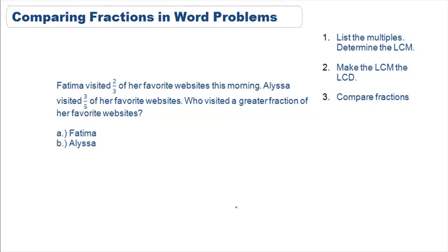Let's jump into the question so we can use the steps to help us solve. The problem reads: Fatima visited two-thirds of her favorite websites this morning. Alyssa visited three-fifths of her favorite websites. Who visited a greater fraction of her favorite websites? We know that Fatima visited two-thirds of her favorite websites and Alyssa visited three-fifths.